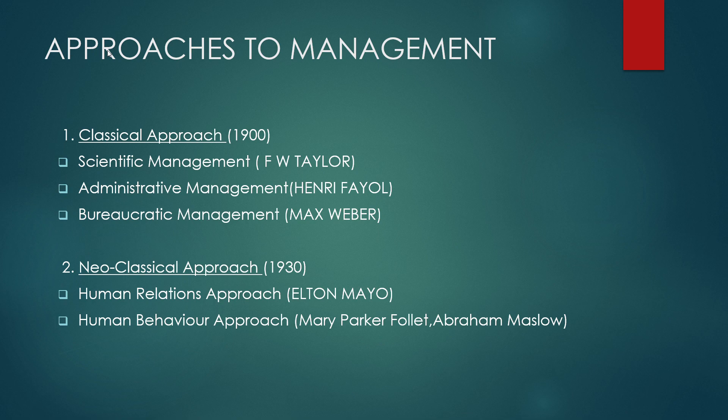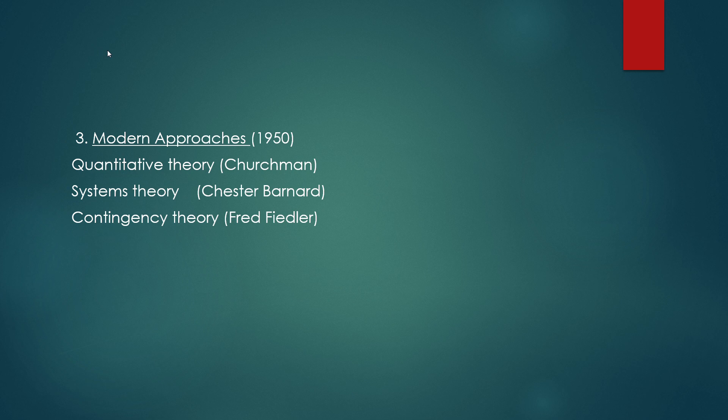The modern approach was started in the year 1950. It believes that employees work for numerous reasons, including to achieve satisfaction, happiness, and desired lifestyles. There are three theories: quantitative theory by Churchman, systems theory by Chester Barnard, and contingency theory by Fred Fiedler. You will study contingency theory in the fifth semester.